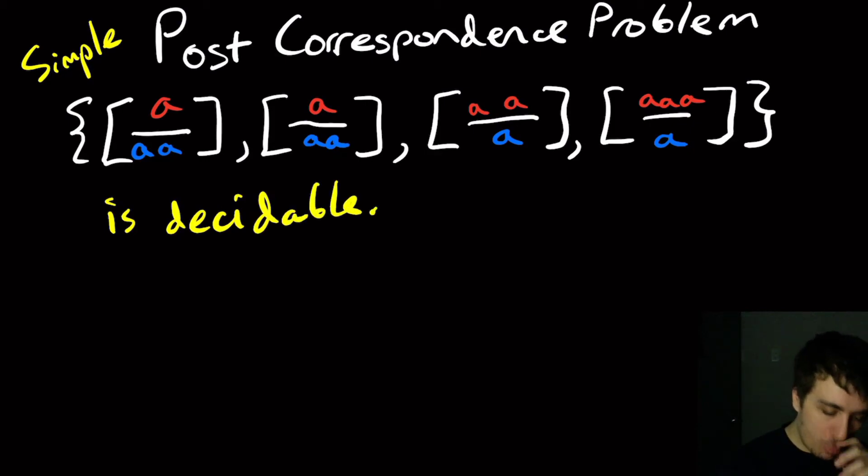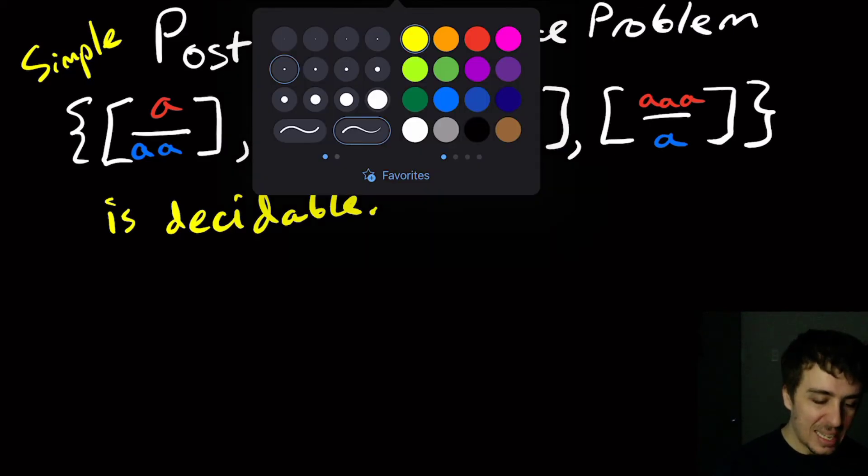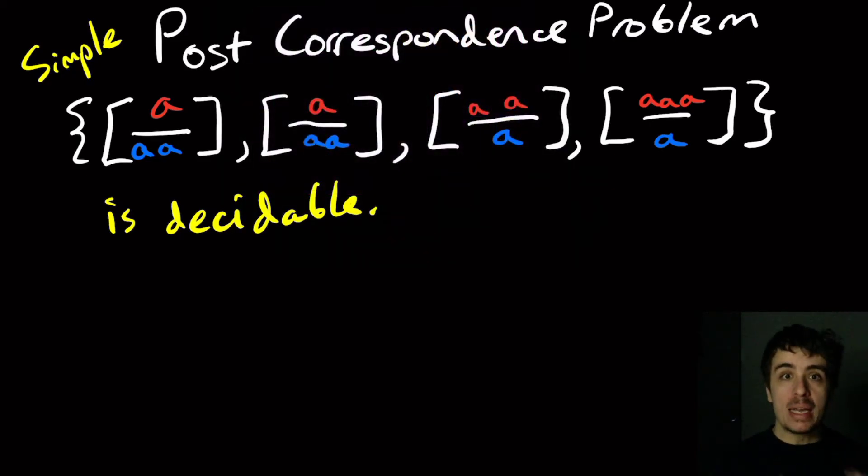and I want to convince you that this variant is decidable. It's actually pretty reasonable how you would prove this. It's actually really easy.